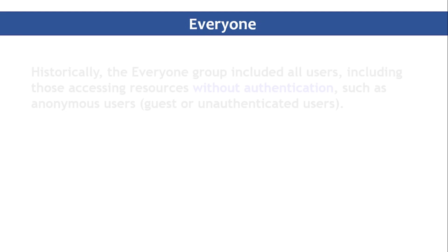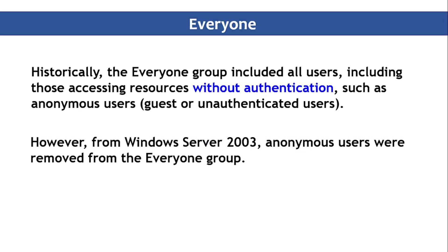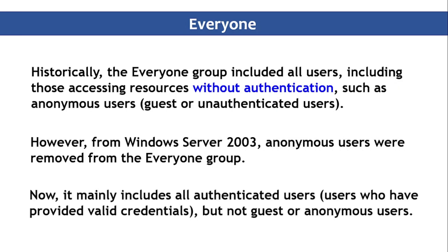Now let's talk about the Everyone group. Historically, the Everyone group included all users, including those accessing resources without authentication — such as anonymous users, guests, or unauthenticated users. However, Microsoft changed this: from Windows Server 2003 onward, anonymous users were removed from the Everyone group to make it more secure. Now it mainly includes authenticated users — those who have provided credentials — but not guest or anonymous users.